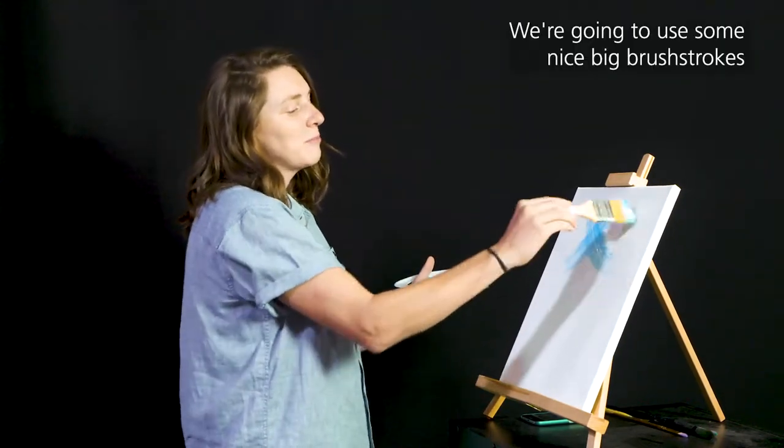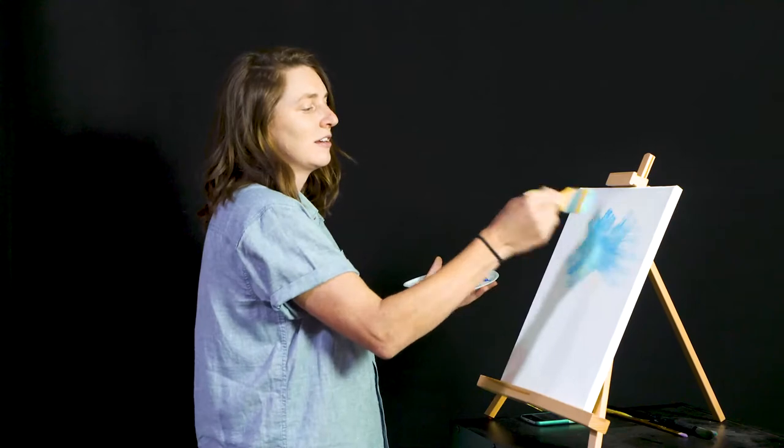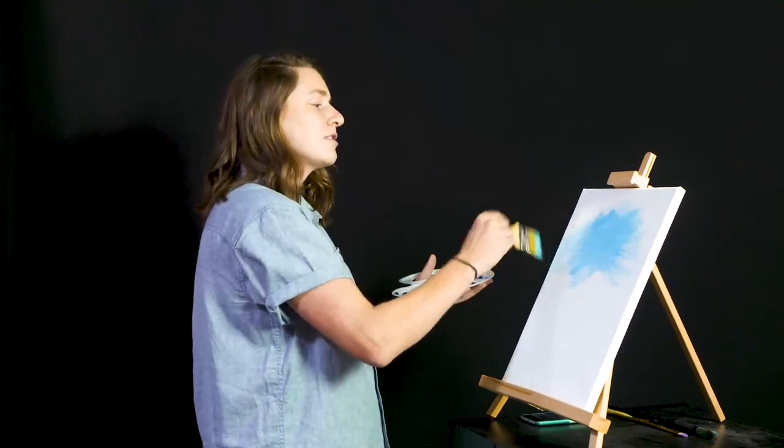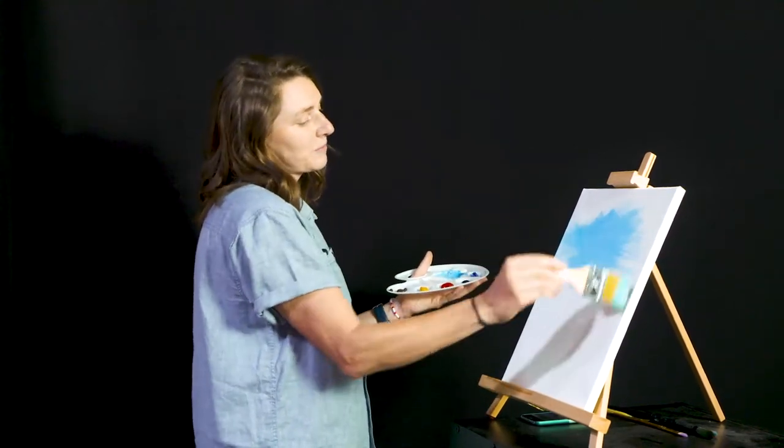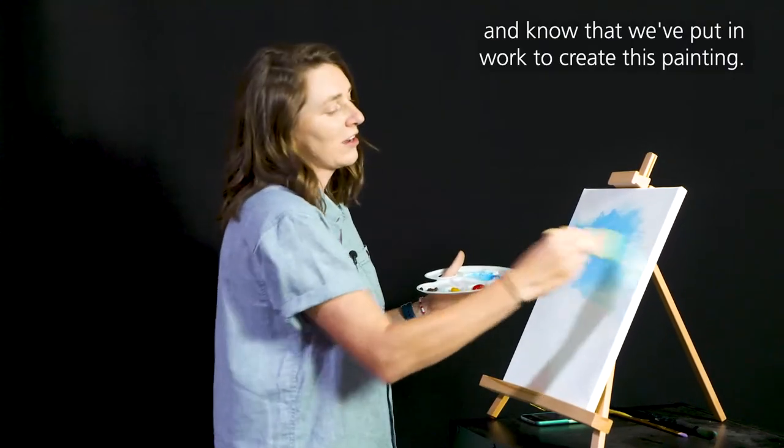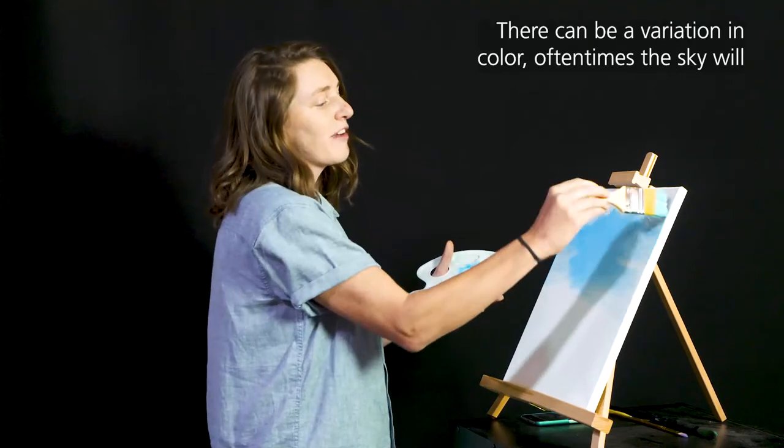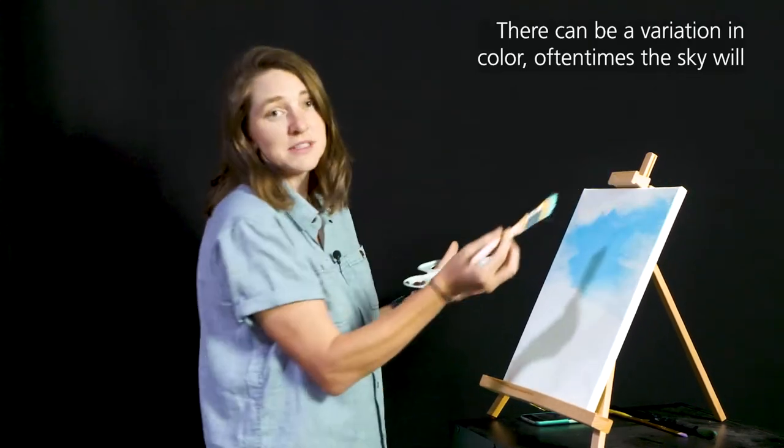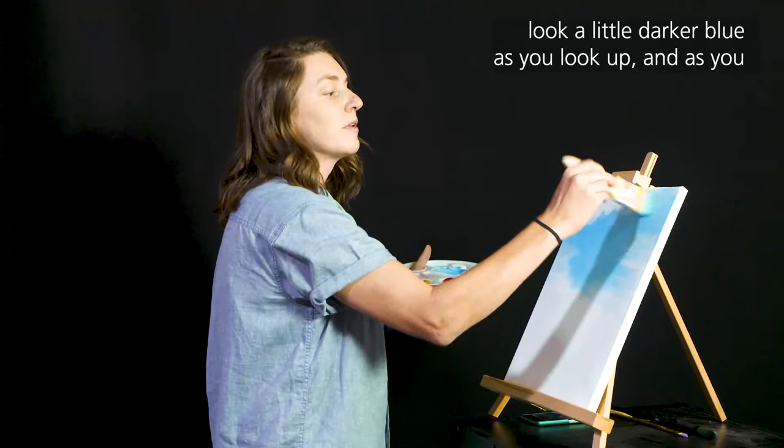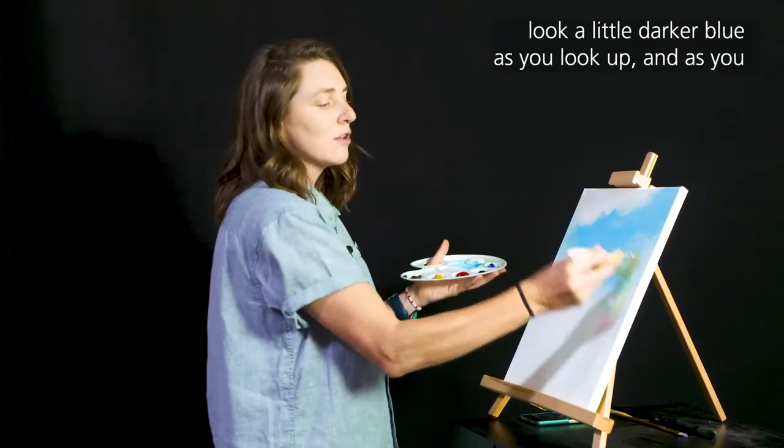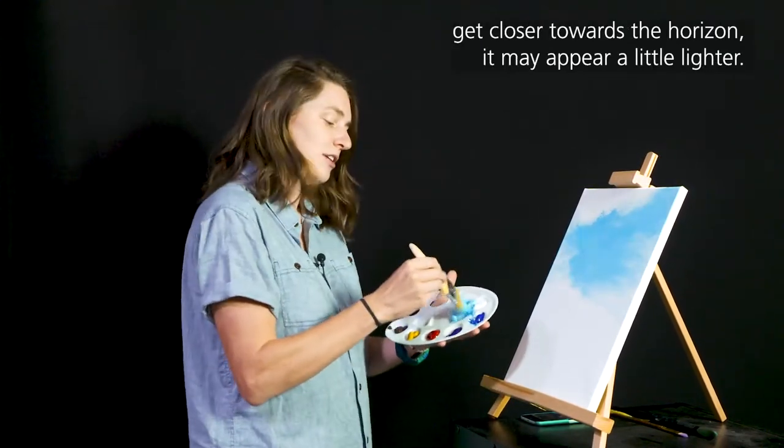We're going to use some nice big brush strokes so you can see the strokes that we've made and know that we've put in work to create this painting. There can be a variation in color. Oftentimes the sky will look a little darker blue as you look up. As you get closer towards the horizon, it may appear a little lighter.